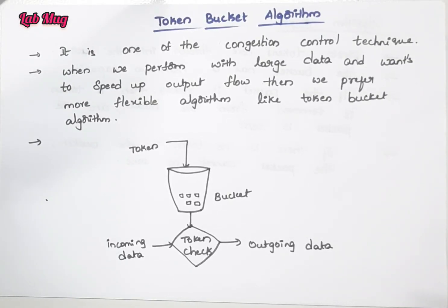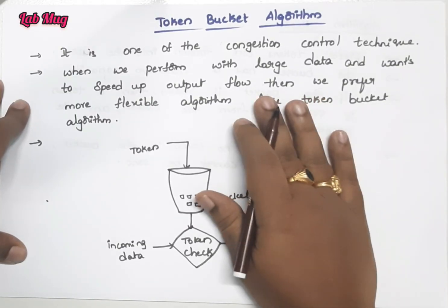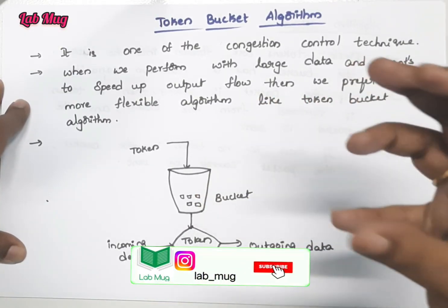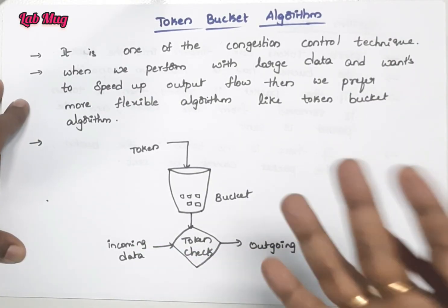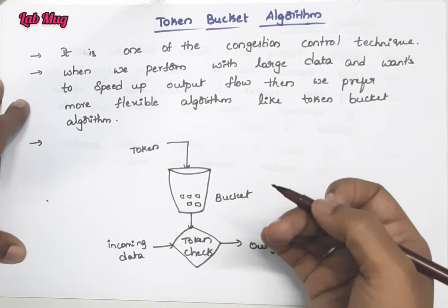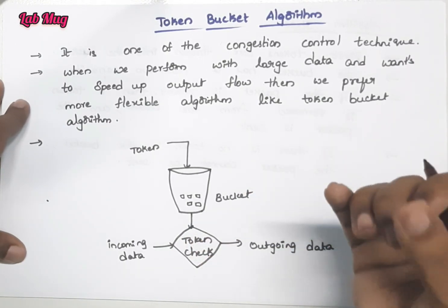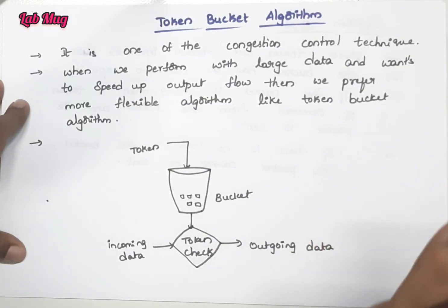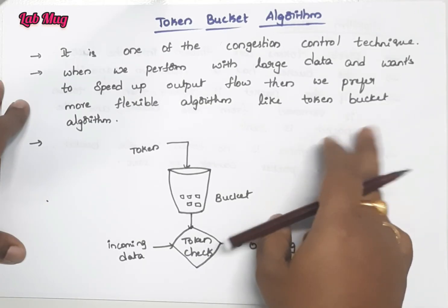Hi everyone. In the previous class, we covered congestion control and the Leaky Bucket Algorithm. Today we will look at the second algorithm: the Token Bucket Algorithm. First, what is congestion? It is a situation where bulk data arrives and causes a jam. We use techniques to control such situations, passing data packets at a controlled rate. These techniques are called congestion control.